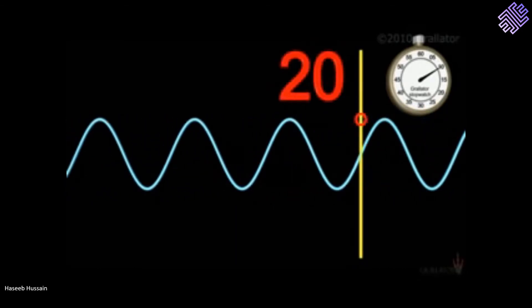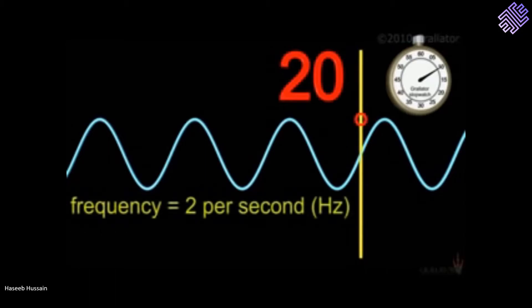I can then ask if 20 peaks pass me in 10 seconds, how many would pass me in 1 second? The answer is 20 divided by 10 equals 2 waves per second. I can say frequency of waves passing me is 2 Hertz.